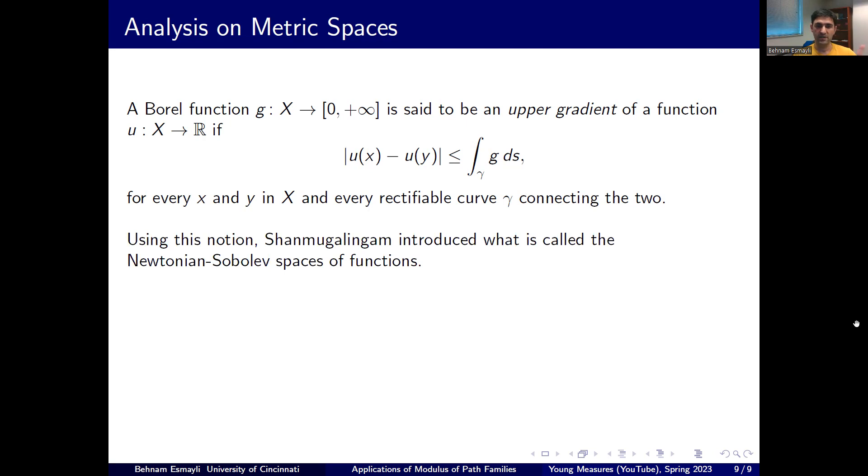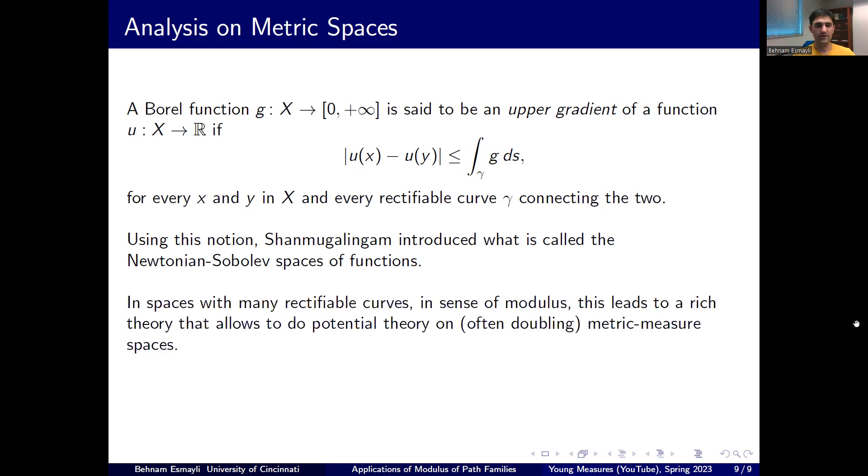Using this notion, Shanmugalingam around 2000 introduced what is called Newtonian Sobolev spaces, which are basically measurable functions that are in Lp and have a gradient, have an upper gradient that is also in Lp. If that happens, we say that the function is in the space N1p. And this may not be that interesting if the space has no rectifiable curves. It may just coincide with Lp class of functions. But if your space does have rectifiable curves and many of those, it becomes a very interesting space, which allows you to do a lot of potential theory and first order analysis on metric spaces.